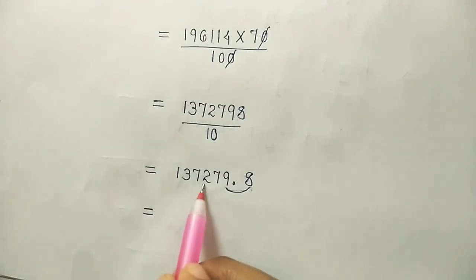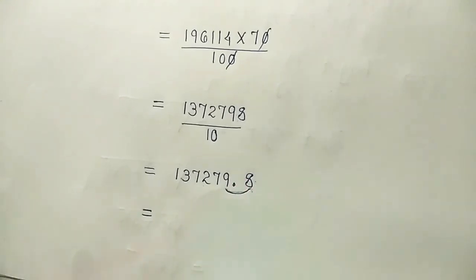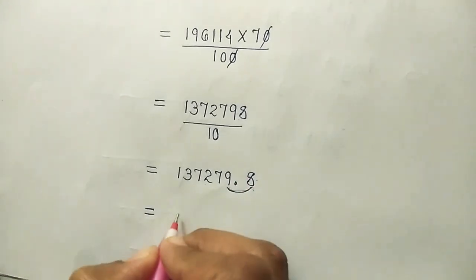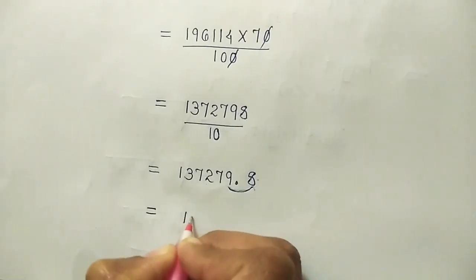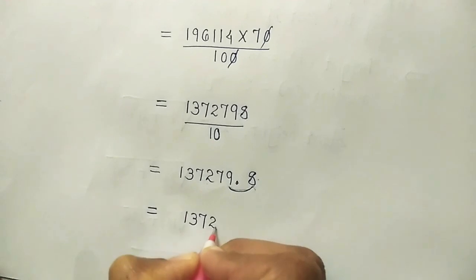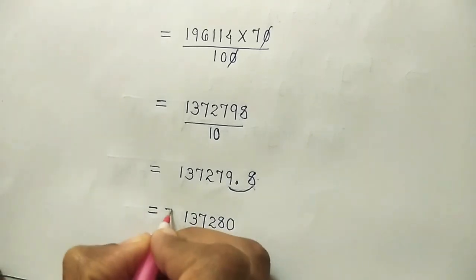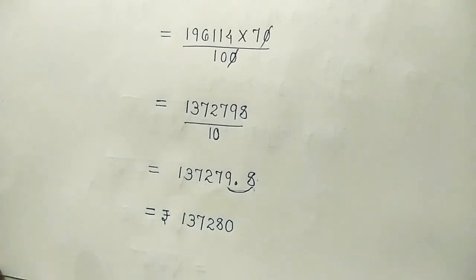So 137279 plus 1. Because this is bigger than 5. So then we will have answer as 137280. This is cost. So it is in rupees.